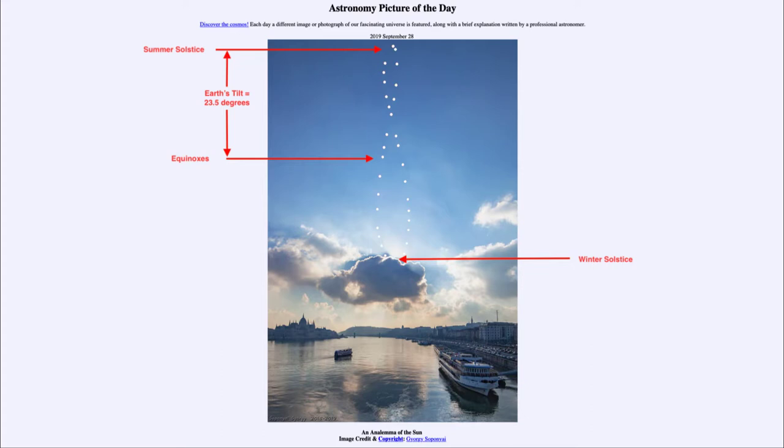So that explains how the analemma stretches in the direction up and down. That would vary depending on the earth's axial tilt. If the earth was tilted less, then the figure eight would not be stretched out as much. If it had a much larger tilt, then the figure eight would be stretched out even more.